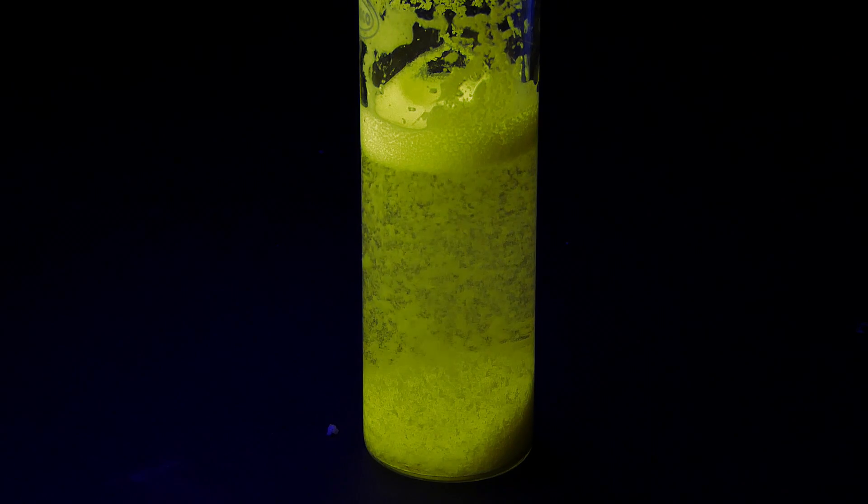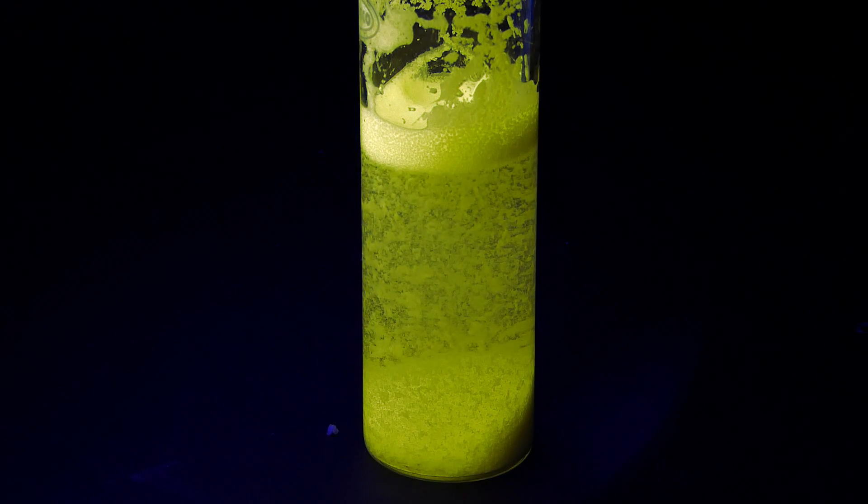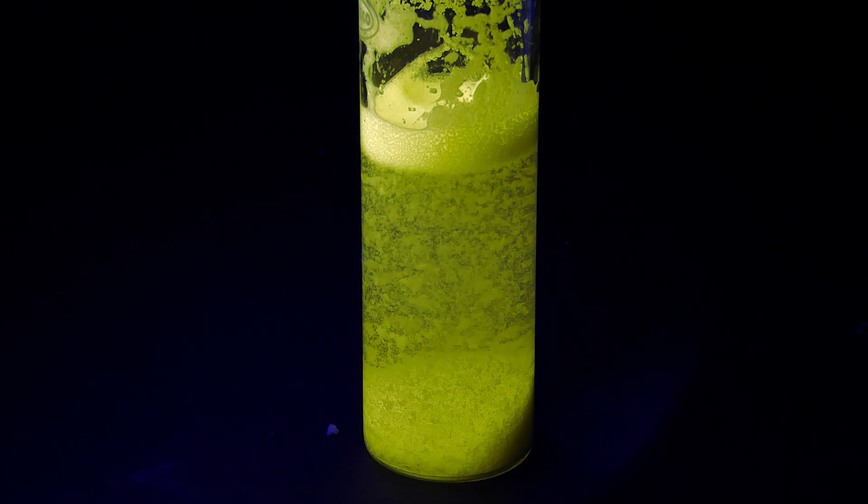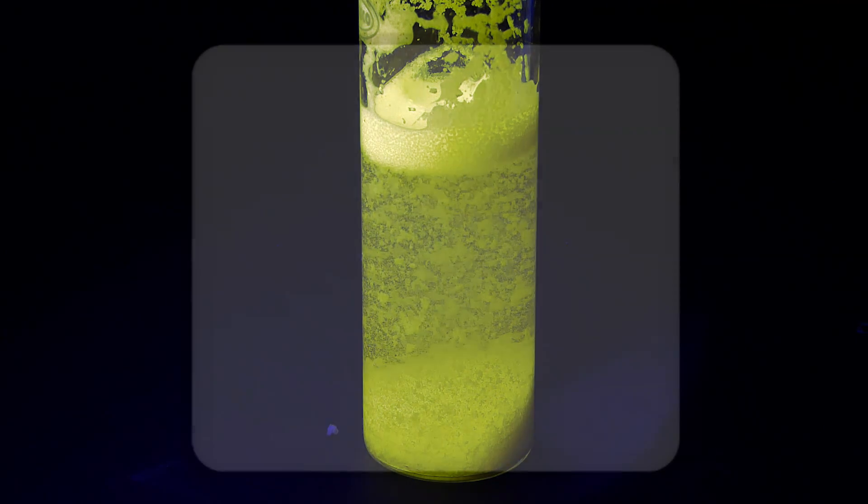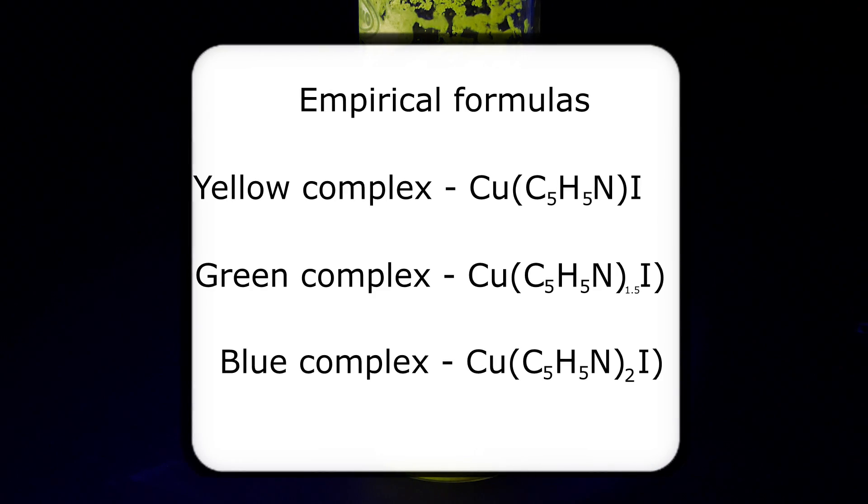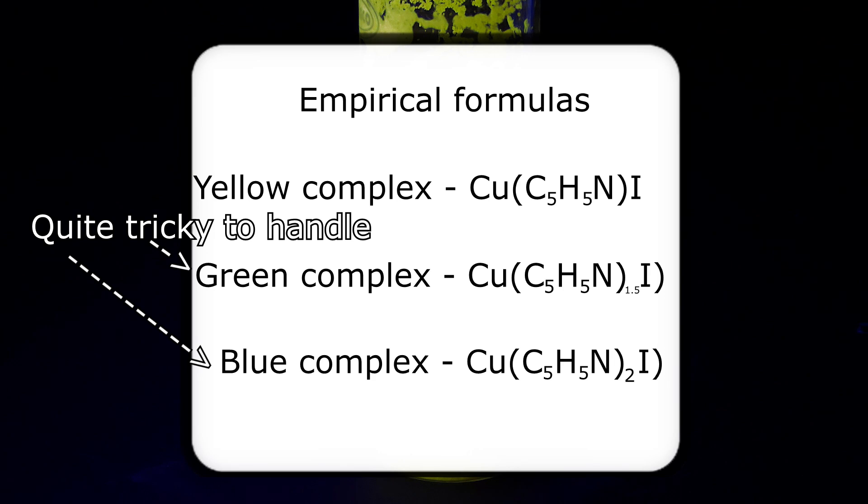Anyway, now that I made the yellow complex, there are technically two still ahead of me, but they are a little bit trickier to handle. You see, they have more pyridine molecules per copper atom than the yellow one, and that makes them quite unstable, meaning that they can turn into the yellow complex and lose their unique colors quite easily. They also cannot be handled dry or even slightly wet, and the only way to store them for a long time is in a weak pyridine solution in water.